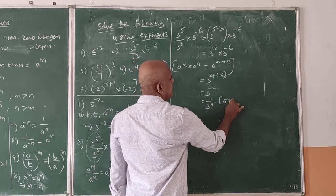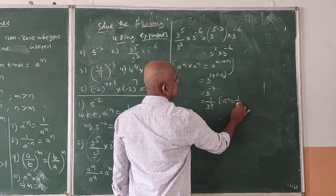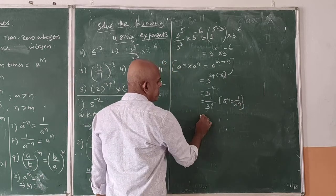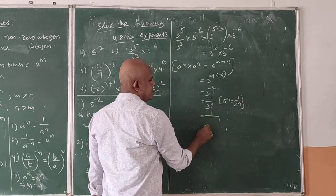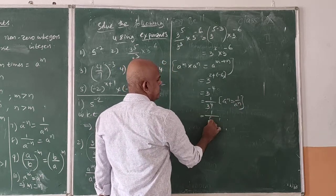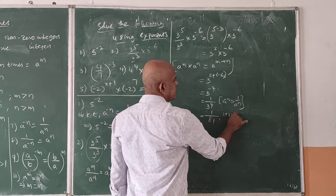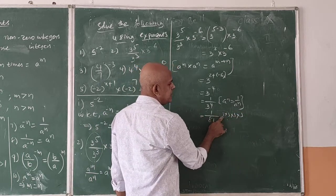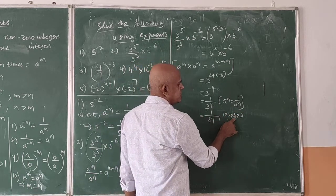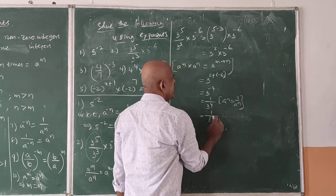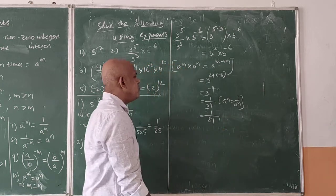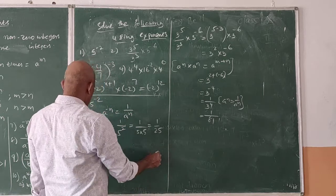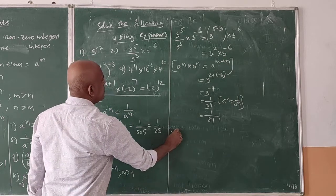Continuing: 3 to the power of 2 plus minus 6, that is 3 to the power of 2 minus 6, which is 3 to the power of minus 4. Since it is in the form of a to the power of minus n, when it comes to the denominator it becomes 1 by 3 to the power of 4. So 3 to the 4th is 3×3×3×3 = 81, giving us 1 by 81.